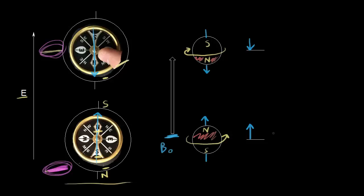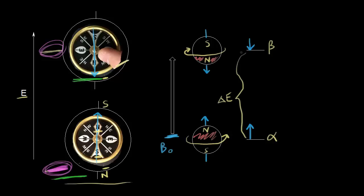When the magnetic moment is aligned with the magnetic field, this is the alpha spin state. When the magnetic moment is aligned against the applied magnetic field, this is the beta spin state. There's a difference in energy between these two spin states, just as there's a difference in energy between the two orientations of the compass needle. The beta spin state is higher in energy than the alpha spin state.